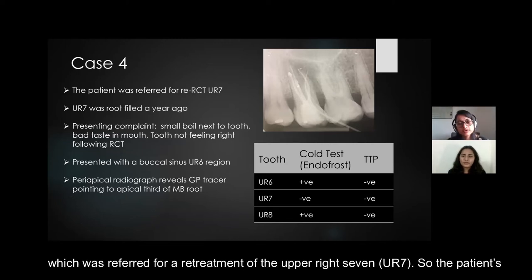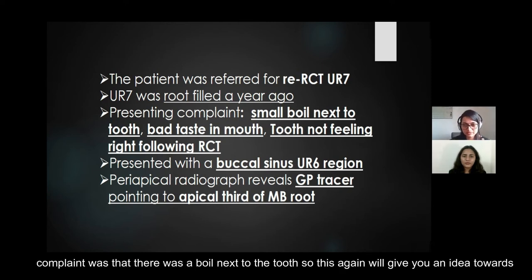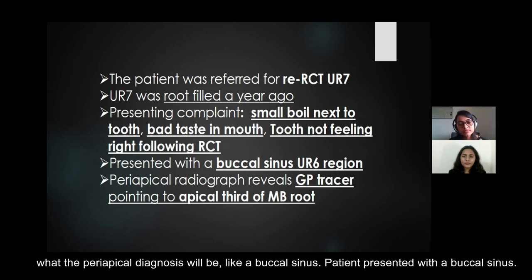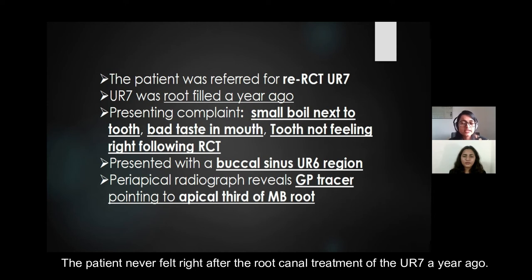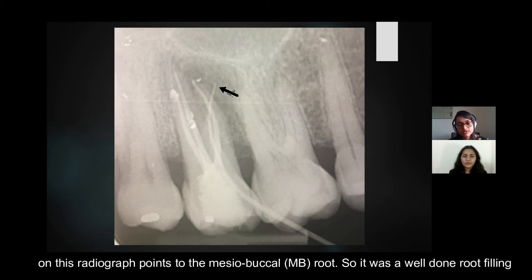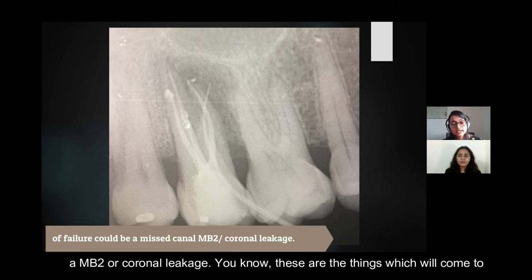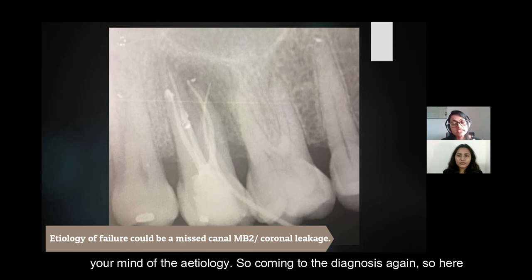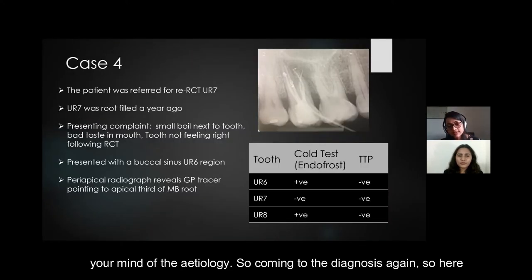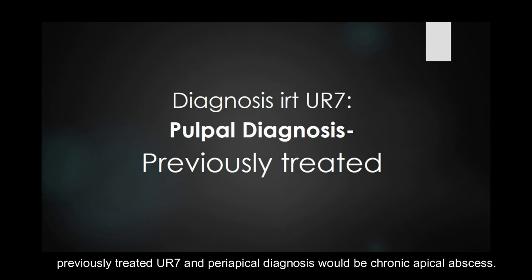The last case was referred for retreatment of the upper right 7. The patient's complaint was of a boil next to the tooth — again giving you an idea of the periapical diagnosis as a buccal sinus. The patient never felt right after root canal treatment of the upper right 7 a year ago. The GP tracer through the buccal sinus on the radiograph points to the mesiobuccal root. It is a well-done root filling, but pointing to the MB root raises suspicion of a missed MB2 or coronal leakage. The pulpal diagnosis is previously treated upper right 7, and the periapical diagnosis is chronic apical abscess.